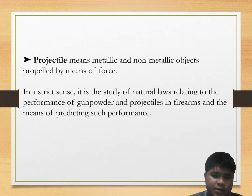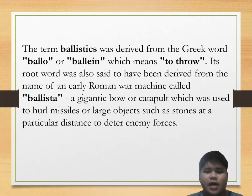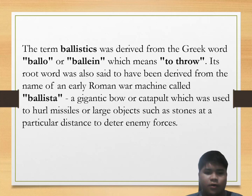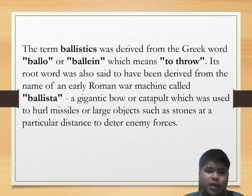The term 'ballistics' was derived from the Greek word 'balu' or 'valein,' which means to throw. Its root word is also said to have been derived from the name of an early Roman war machine called the ballista — a gigantic bow or catapult used to hurl missiles or large objects such as stones at enemy forces. Simply speaking, the ballista is considered an ancient artillery weapon.